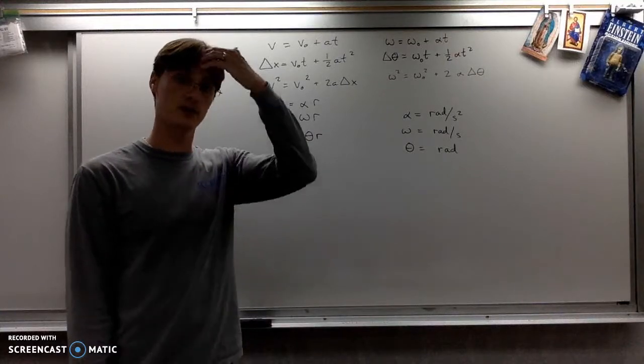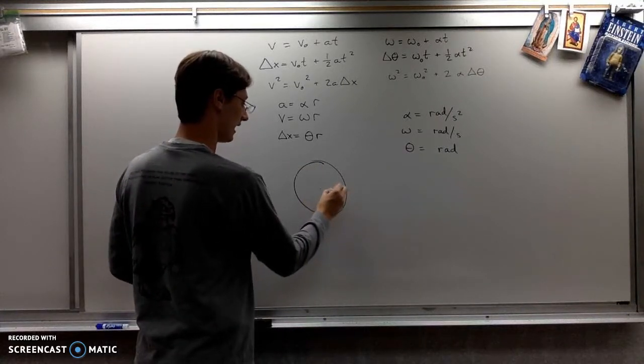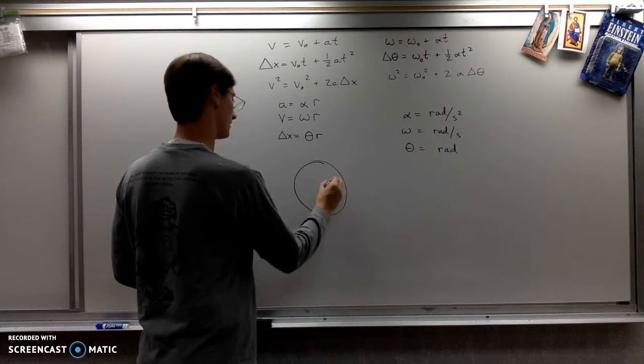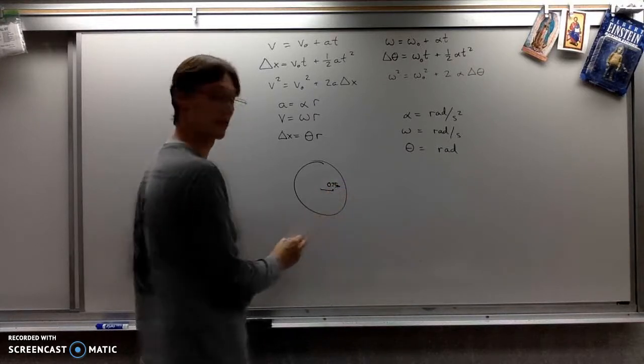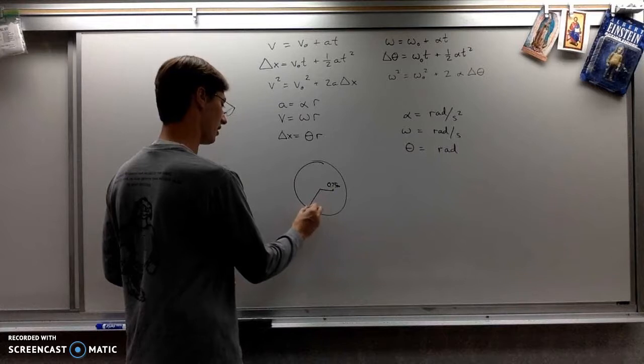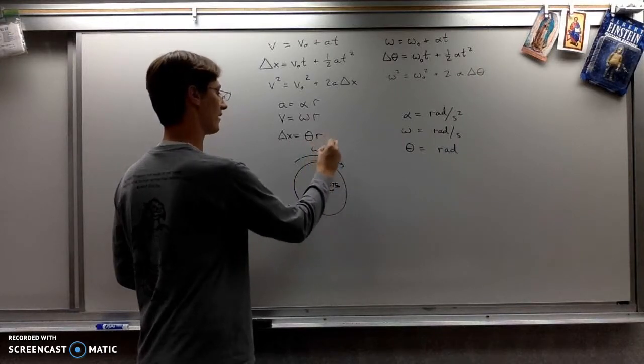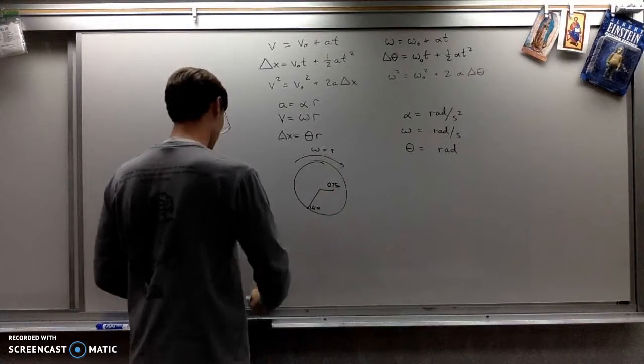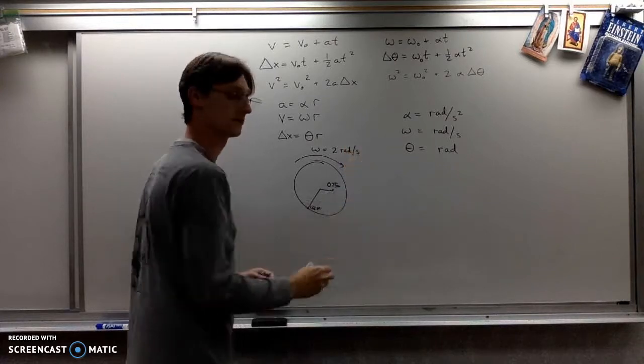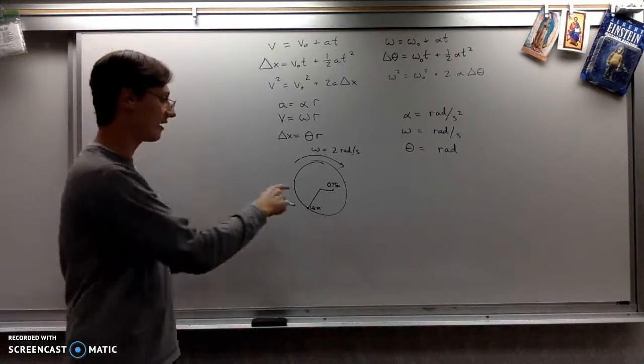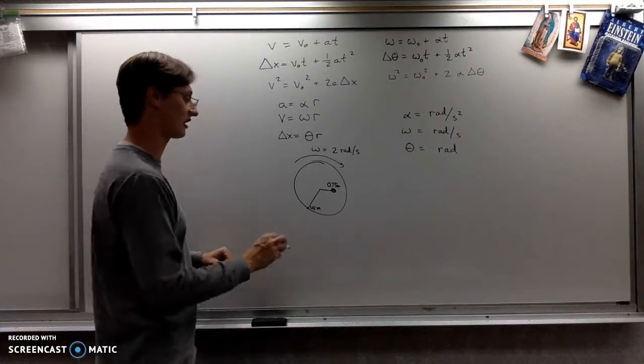So if we're looking at the example of the child on a spinning merry-go-round - here's your merry-go-round, and this spot here is 0.75 meters from the center, and this other point over here is 1.5 meters from the center. And the merry-go-round is spinning around at a rate of 2 radians per second. If I want to know how fast a kid located right here is moving and what his centripetal acceleration is...